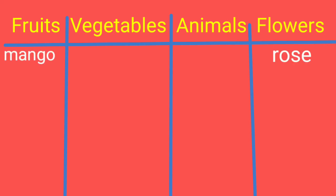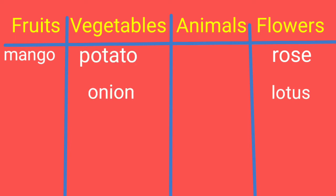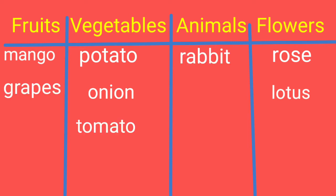Rose - flower, lotus - flower, potato - vegetable, onion - vegetable, tomato - vegetable, rabbit - animal, grapes - fruit.